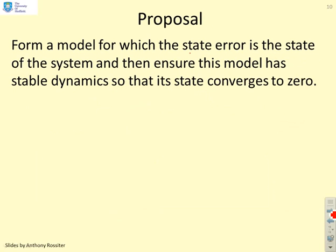Here's the proposal. We're going to form a model for which the state error is the state of the system. In other words we're going to define e equals x minus z and define this e as the state of a system. If we can make this system so that e goes to zero then the error between x and z must go to zero.